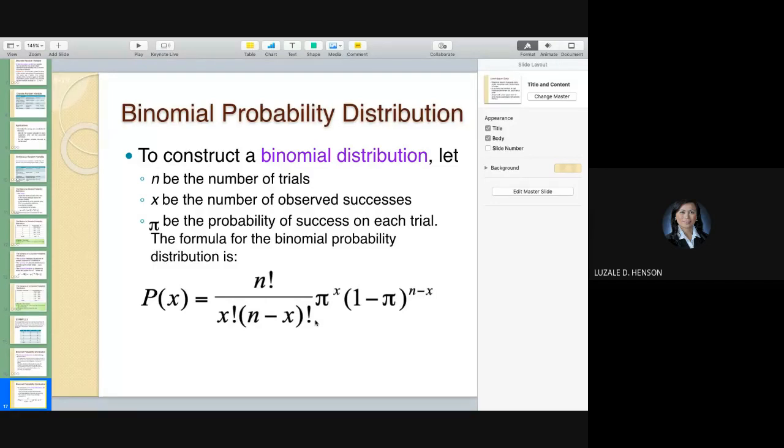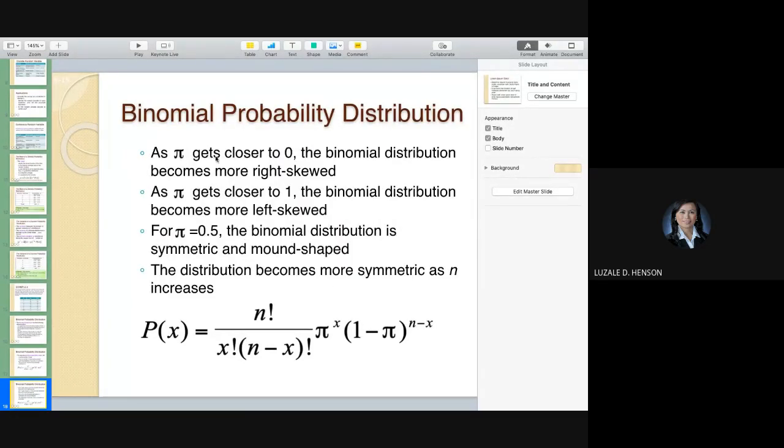5 factorial is 5 times 4 times 3 times 2 times 1. That is what 5 factorial is. So 0 factorial is equal to 1.